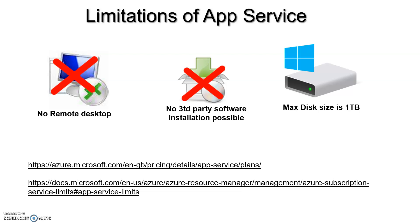You can't install any third-party software on app services because you don't have complete control over the OS. If you have any third-party installation requirement, better go with Azure VMs. Also, the maximum disk size provided by app services is one TB, and that is only under the isolated plan.